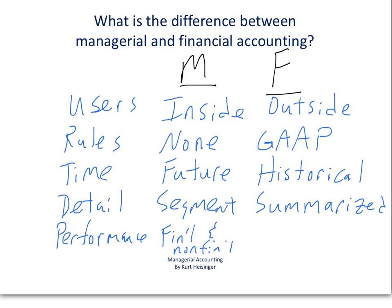With Financial Accounting, we really are looking at financial information to evaluate performance. So we might be looking at return on investment for the entire company, or gross profit margin ratio for the entire company — that is the type of information we prepare to evaluate the performance of the company as a whole. So what you see here is a summary of the differences between Managerial Accounting and Financial Accounting.